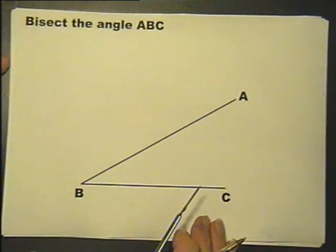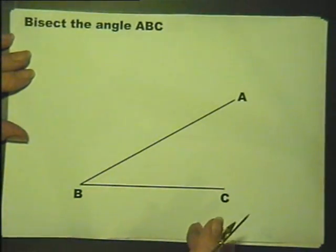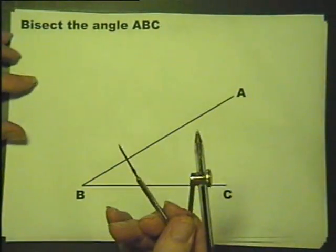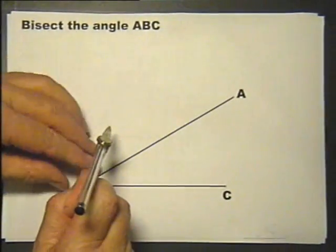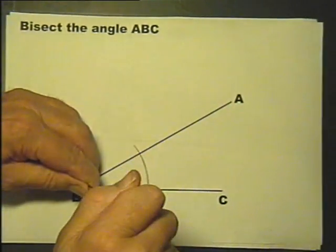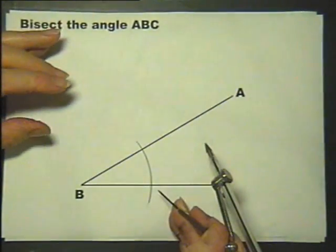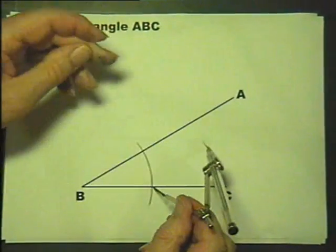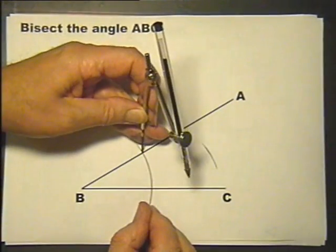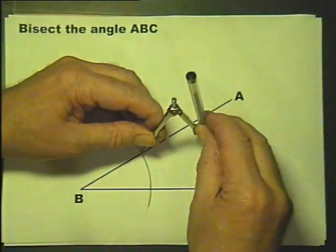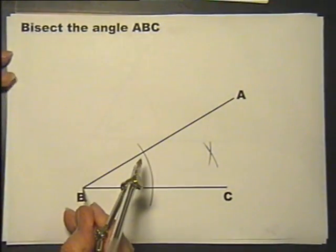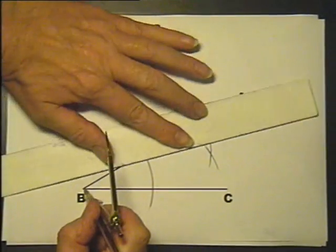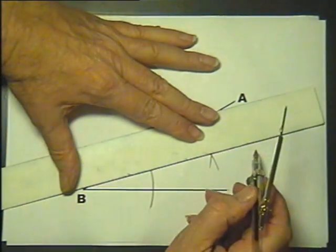Now let's look at bisecting an angle, in other words cutting in half exactly. So we're going to bisect the angle ABC. Any radius whatsoever, draw an arc. Now you can change the radius now but there's no need to, as long as when you put the compass point in there and you draw an arc, you don't change the radius when you go over there and draw an arc. As far as I'm concerned you might as well leave it the same all the time. That cuts the angle exactly in half, it bisects it.